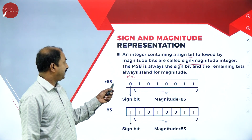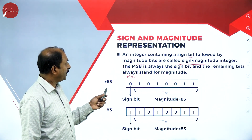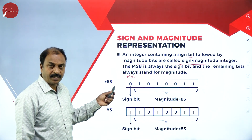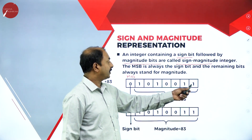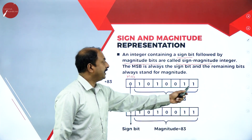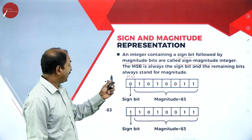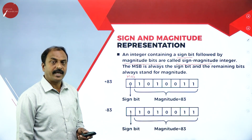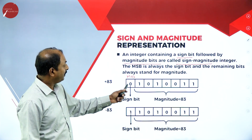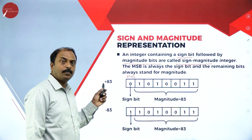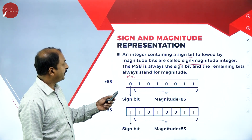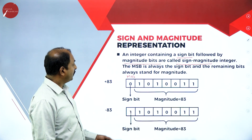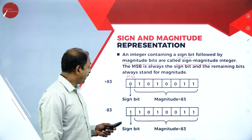Let us take an example: this is +83. If you convert 83 into binary, this is a decimal number — if you convert it you'll get these values. Here, the MSB — most significant bit — is 0. If the sign bit is 0, it is referred to as a positive number, or +83. This is the sign bit and all the others are magnitude bits — that is sign and magnitude.